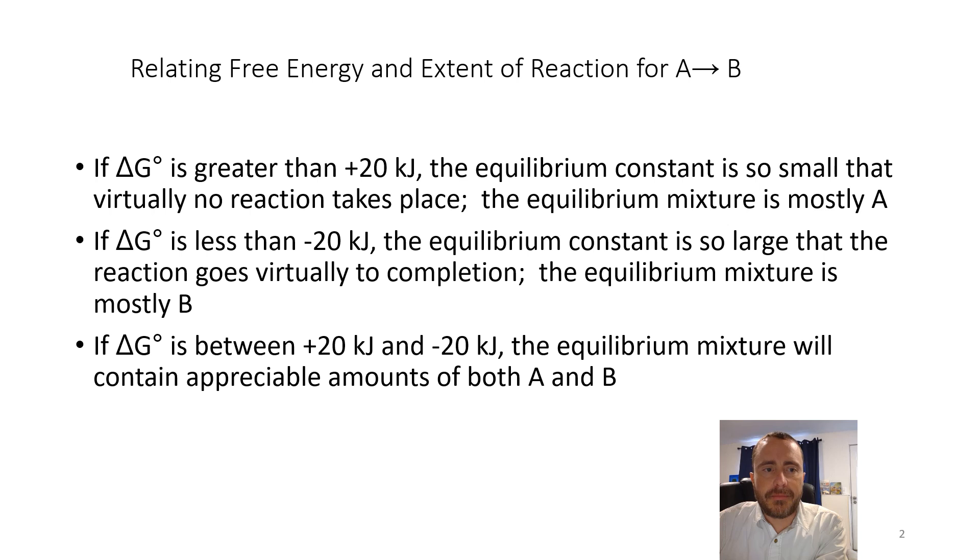So a general rule of thumb when it comes to our Gibbs free energies - these are not hard and fast numbers, so I'm not going to ask you like if it's greater than this or smaller than that. But just kind of understand that when we have a very large K, that means we're basically going to products. When we have a very small K, we have almost no products, so we have mostly reactants left over. This is the same sort of thing.